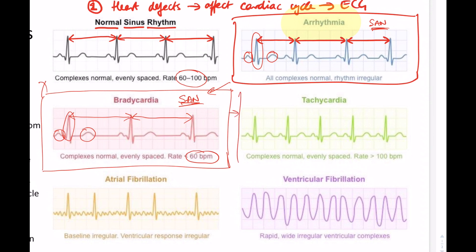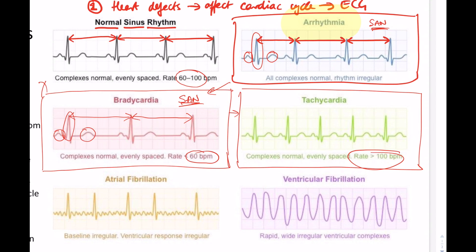Next, tachycardia: this is characterized by a heart rate much higher than normal. The time it takes for each cardiac cycle is much smaller compared to normal sinus rhythm. We still see normal atrial contraction, normal ventricular contraction, and normal diastole — it's just the rate of the beat that is much higher than normal. Again, this is attributed to sinoatrial node function.